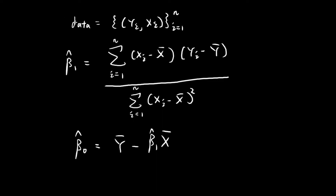Last time I showed you how, after we've collected our data points, we can use these two formulas to obtain our estimates of beta 0 and beta 1. In this video, I'm going to show you a specific example of how we can apply these formulas.